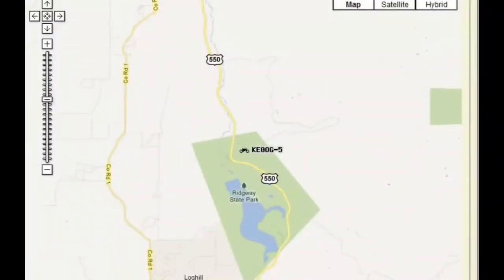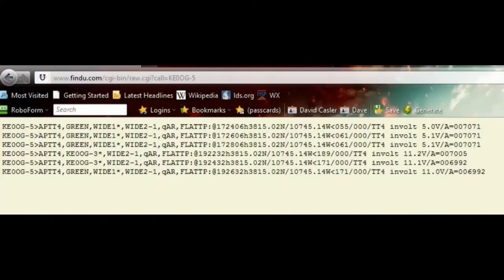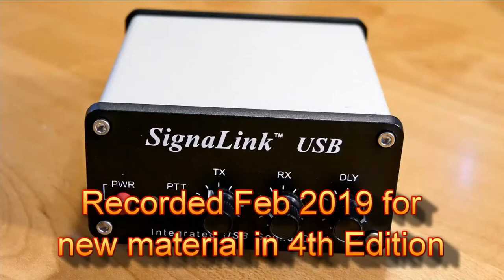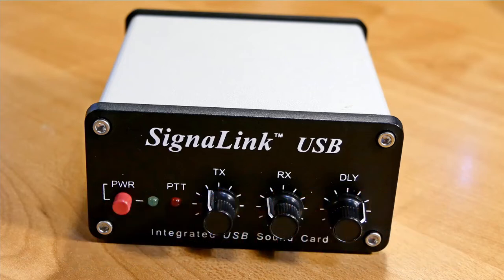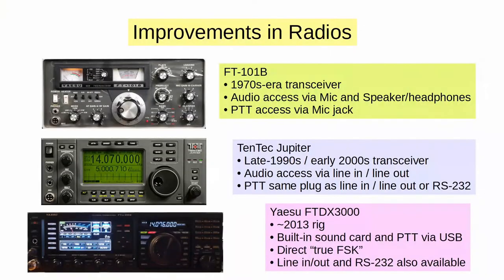We're looking at the internet, and you see me there — KE0OG-5 — and here's what the raw data appears like. Let's jump ahead to 2019 and talk about how things have changed. Digital modes have changed quite a bit on HF. One of the things you need to do is put some sort of a device between your radio and your computer to buffer the signals. This is an example of the Signalink USB — a very popular device that sits between your radio and the computer. Radios have evolved quite a bit.